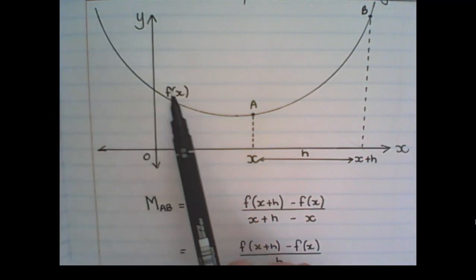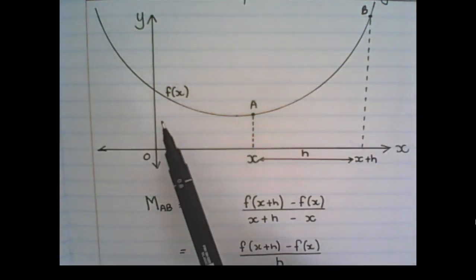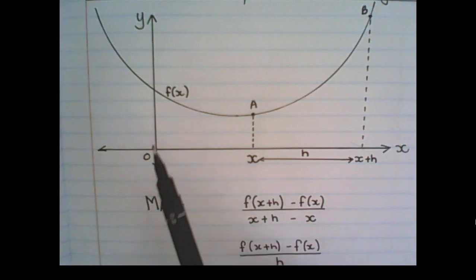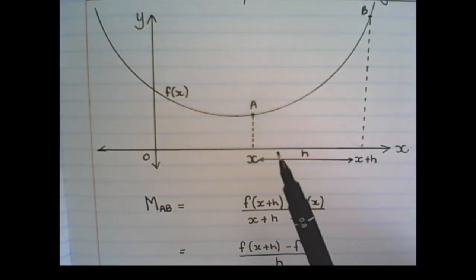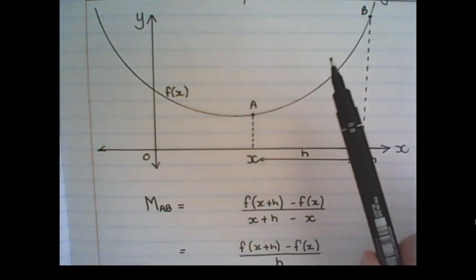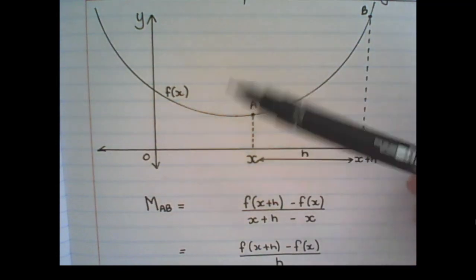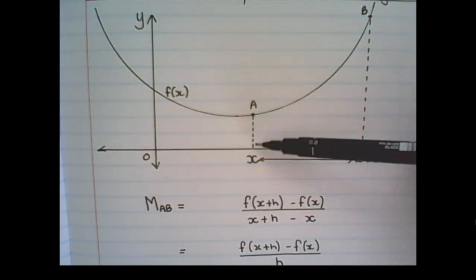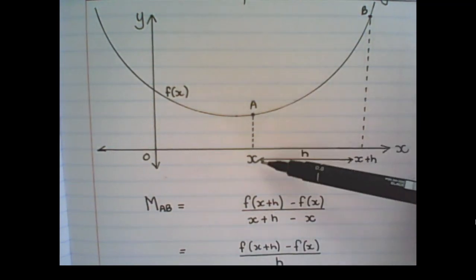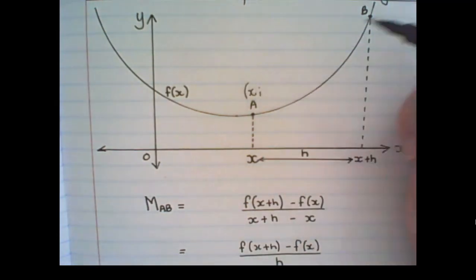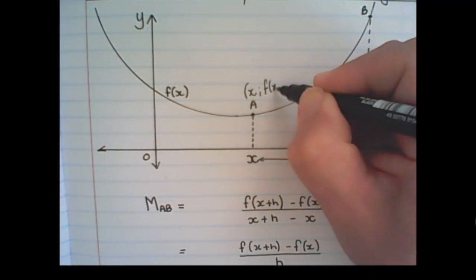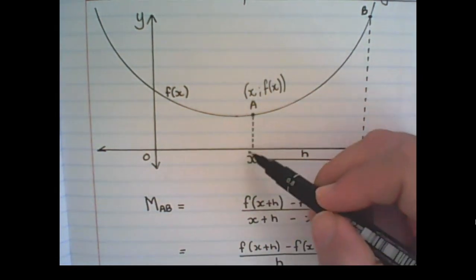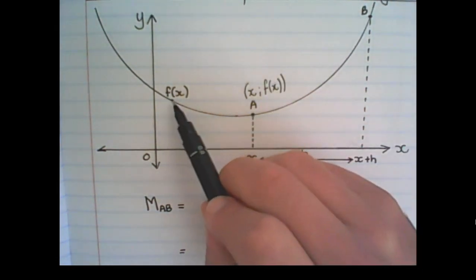Here I have drawn the parabola of f(x). And I have two points on the parabola, a and b. And I want to find the gradient between these two points. At point a we have the value of x. And then the value of y in the coordinate would be that x value substituted into the function.